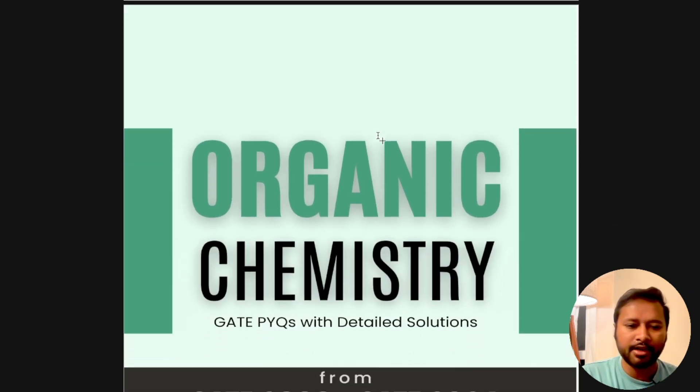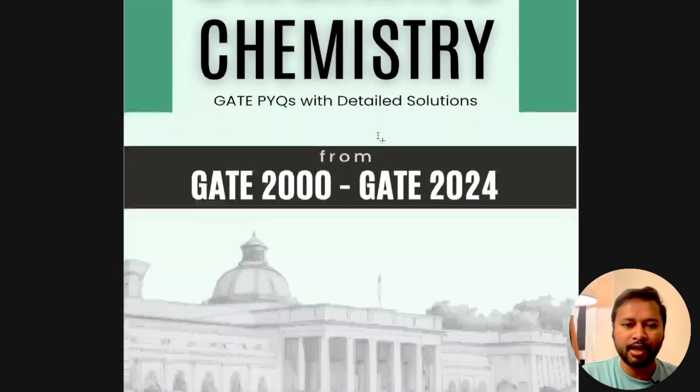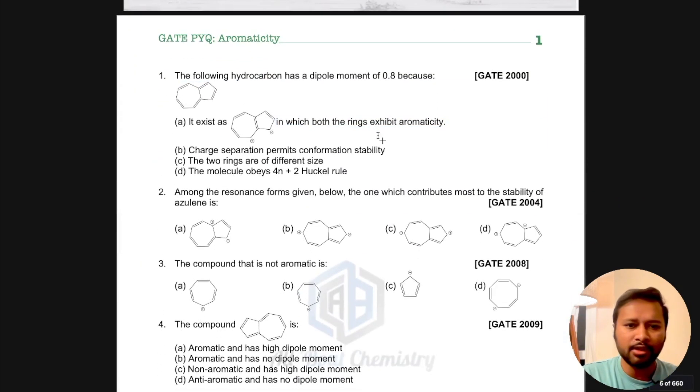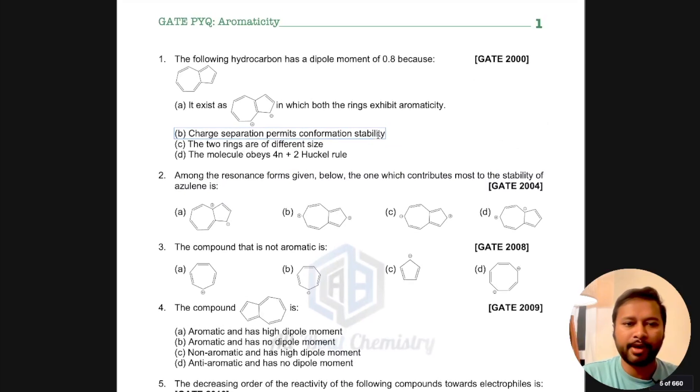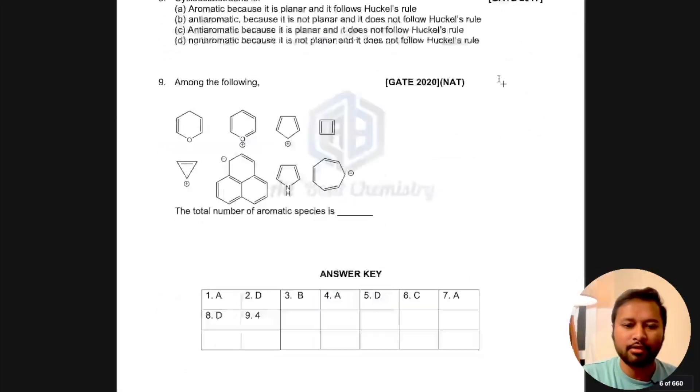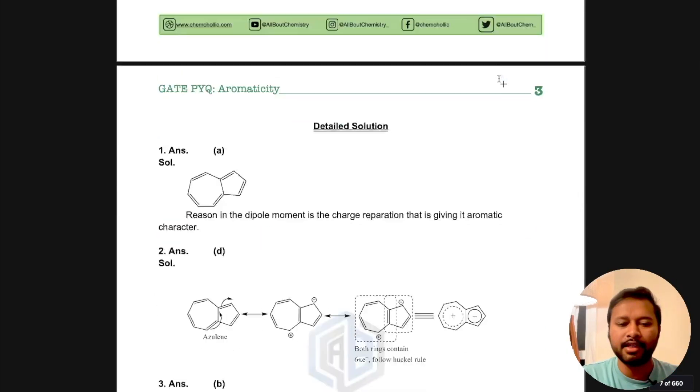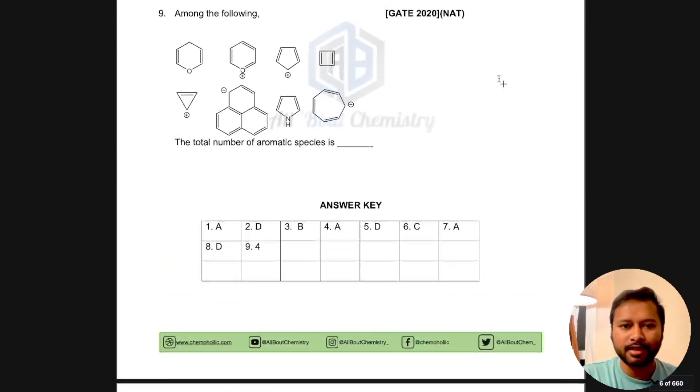This is the organic chemistry portion. First, you can see the topic of aromaticity. You have questions with the year they were asked mentioned, like GATE 2000, then the question and the four options.